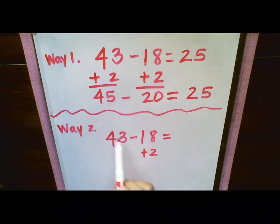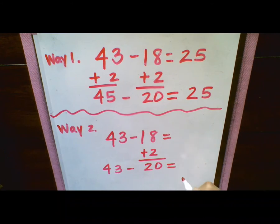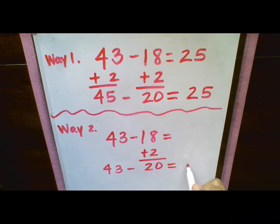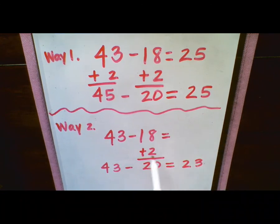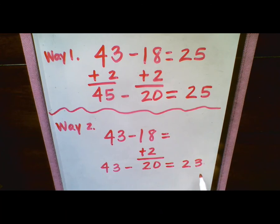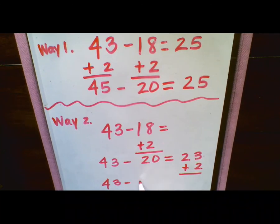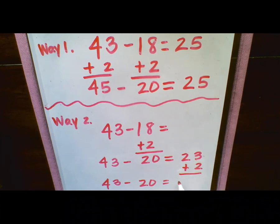However, we are not going to add it to our 43 at this point. We're just going to go ahead and add it to the 18 to get 20. So we would end up with 43 minus 20. 43 minus 20 is going to give us 23. Now here is where we do the same thing. We added 2 here. So now we're going to add 2 to our sum. So now we have 43 minus 20. And if we add our 23 plus our 2, we're going to get 25.